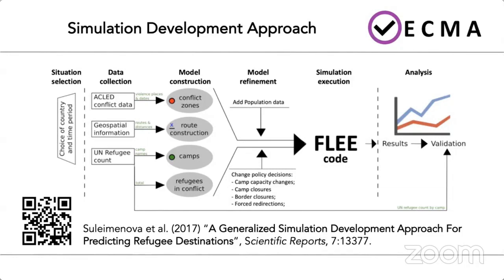Once we have built the initial model, we refine it in the fourth phase. Here, we manually extract population data to help determine where forcibly displaced people flee from, as well as information on border closures and forced directions. The fifth phase involves the main simulation, which we run to predict the total number of forced population in the conflict and the distribution of displaced people across camps. We run our simulations using the FLEA agent-based code and perform sensitivity analysis on input parameters, then analyze and validate results against UNHCR displacement numbers.